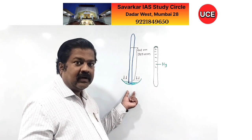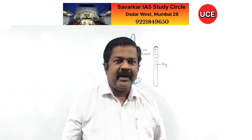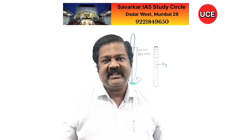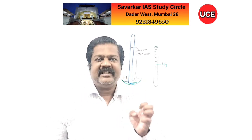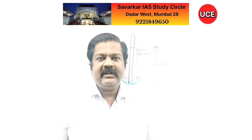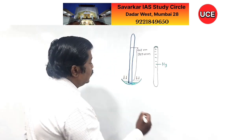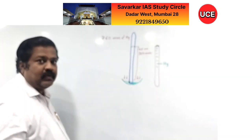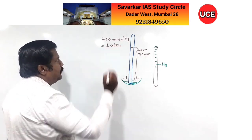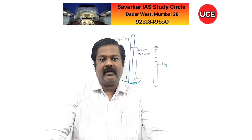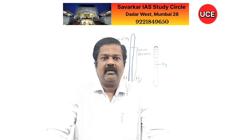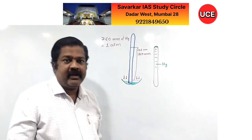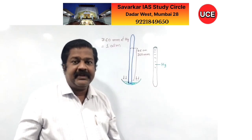If pressure increases, mercury will rise. If you take this instrument underground into mines, you will find pressure is increasing. We can measure pressure in terms of millimeters of mercury. So 760 mm of mercury is considered as one atmospheric pressure. As you go to higher altitude, pressure decreases, causing various changes.